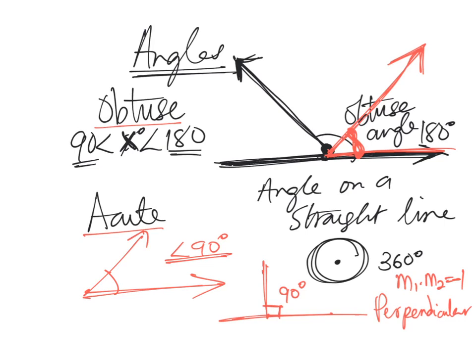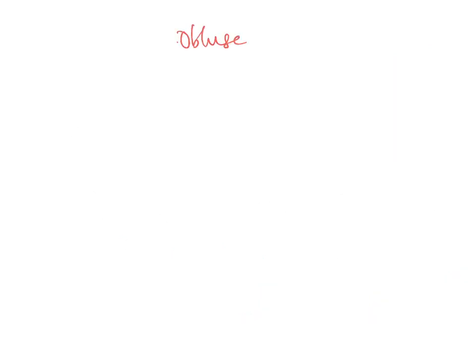So basically, we've talked about obtuse, we've talked about acute, we've talked about right angles. These are all types of angles we can discuss.